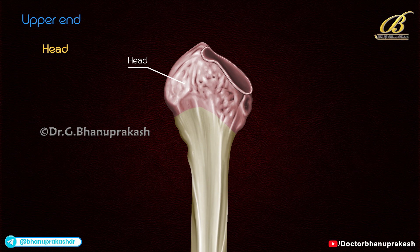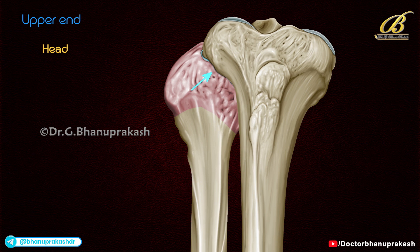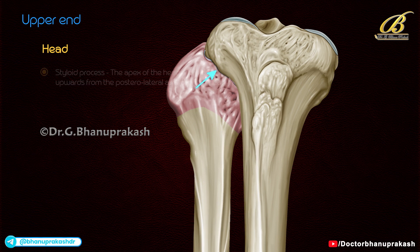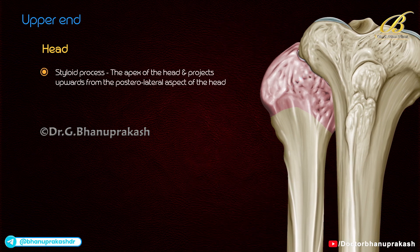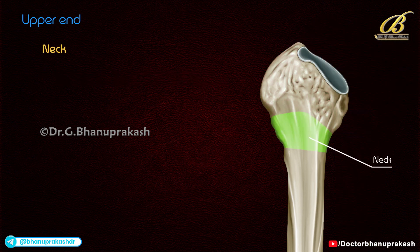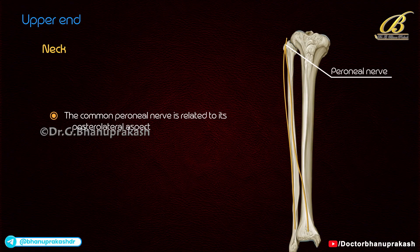The upper end has a head and a neck. The head is the upper expanded part and overhangs the shaft on the posterior and lateral aspects. It has a circular facet which articulates with the fibular facet on the lateral condyle of the tibia. The styloid process is the apex of the head and projects upwards from the posterolateral aspect. The neck is the constricted part right below the head, connecting the head with the shaft; the common peroneal nerve is related to its posterolateral aspect.